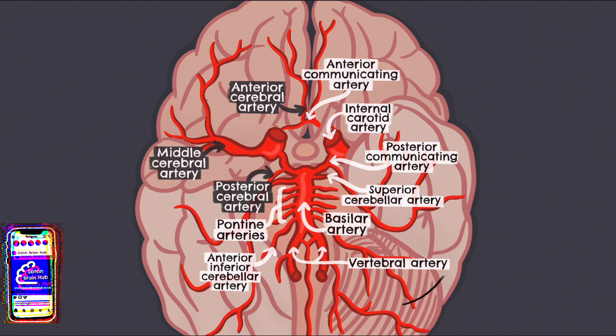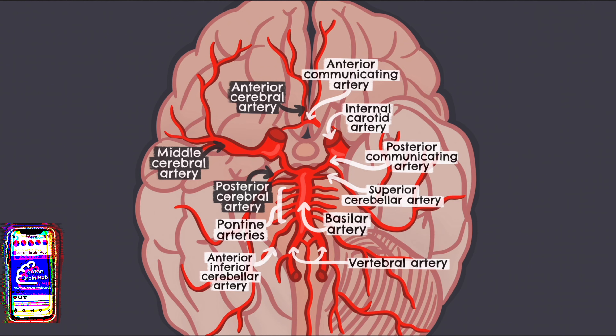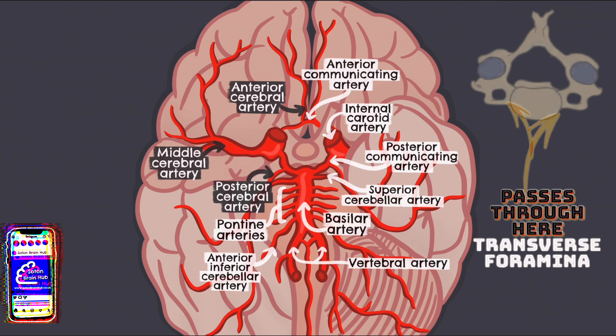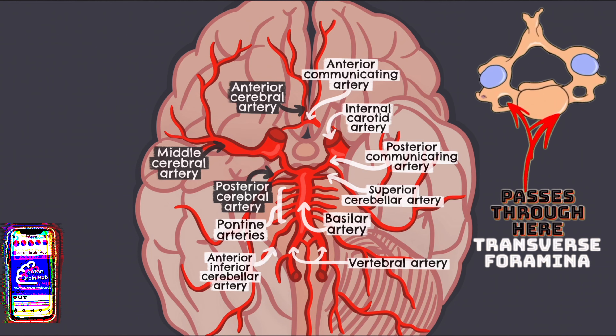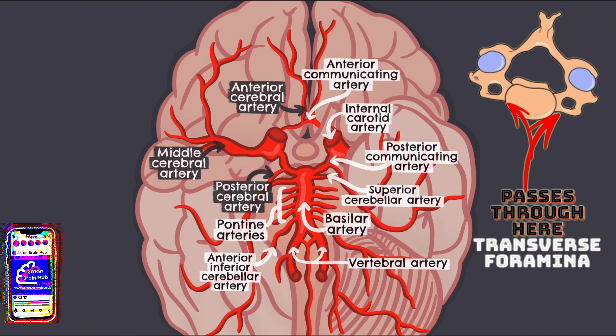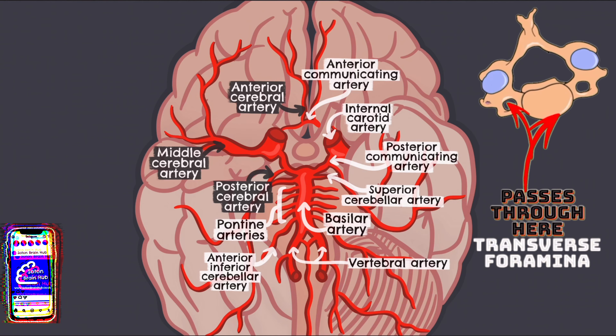Next along we have the vertebral arteries. These are important arteries found in the neck that originate from the subclavian arteries and travel up the neck to come together to form the basilar artery.